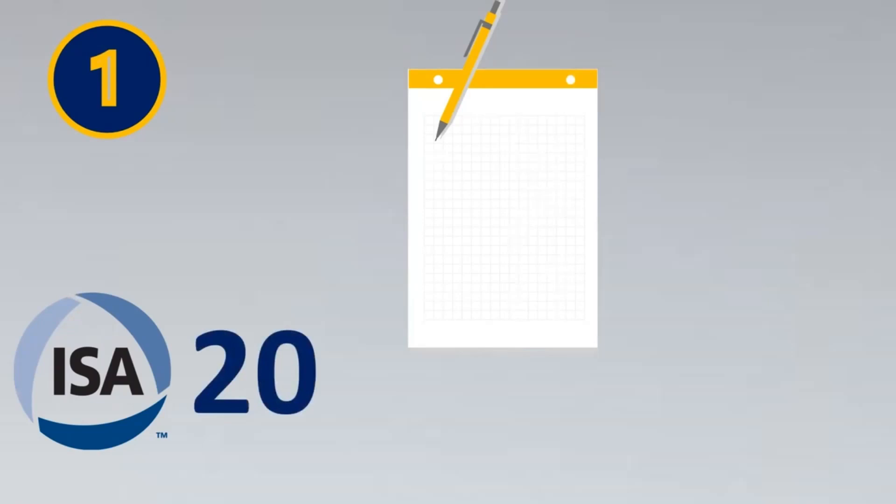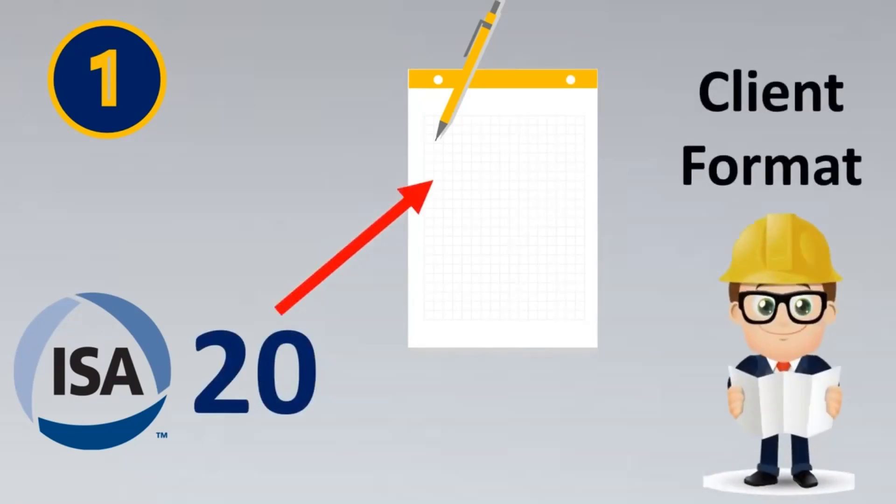The first step in preparing an instrument data sheet is to freeze the format of the data sheet. We could refer to international standards which are recommended like ISA 20, or we could go for client formats. First we need to freeze the format of the data sheet. Once this is done, the interesting part starts.